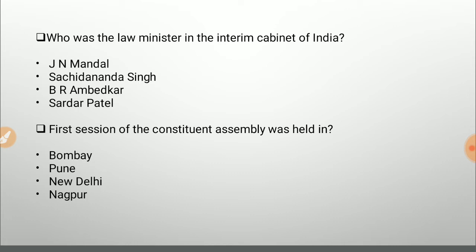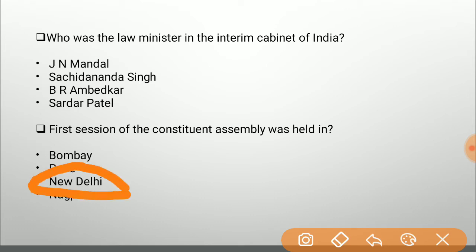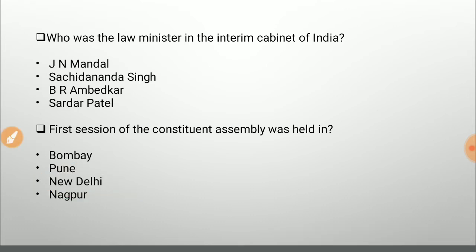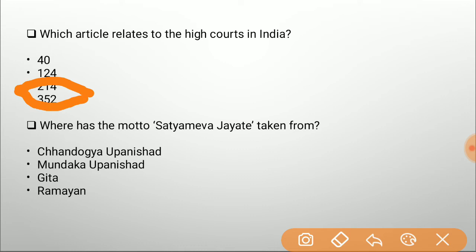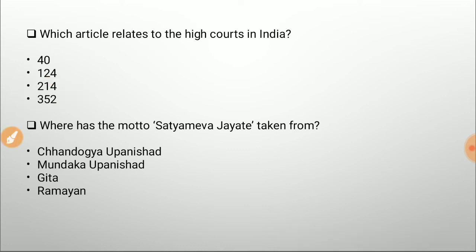The first session of the Constituent Assembly was held in — options are Bombay, Pune, New Delhi, or Nagpur. It was held in New Delhi. Which article relates to the High Courts in India? Article 40 relates to the directive principle of state policy (Panchayati Raj), Article 124 relates to the Supreme Court, Article 352 relates to national emergency, and Article 214 is the one which relates to High Courts in India.